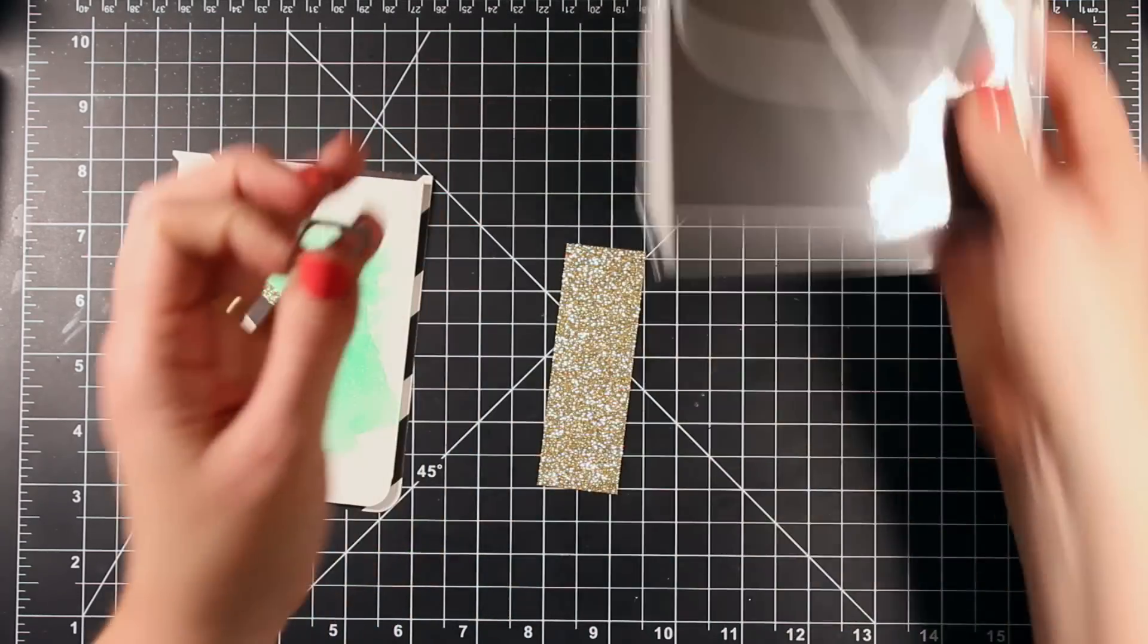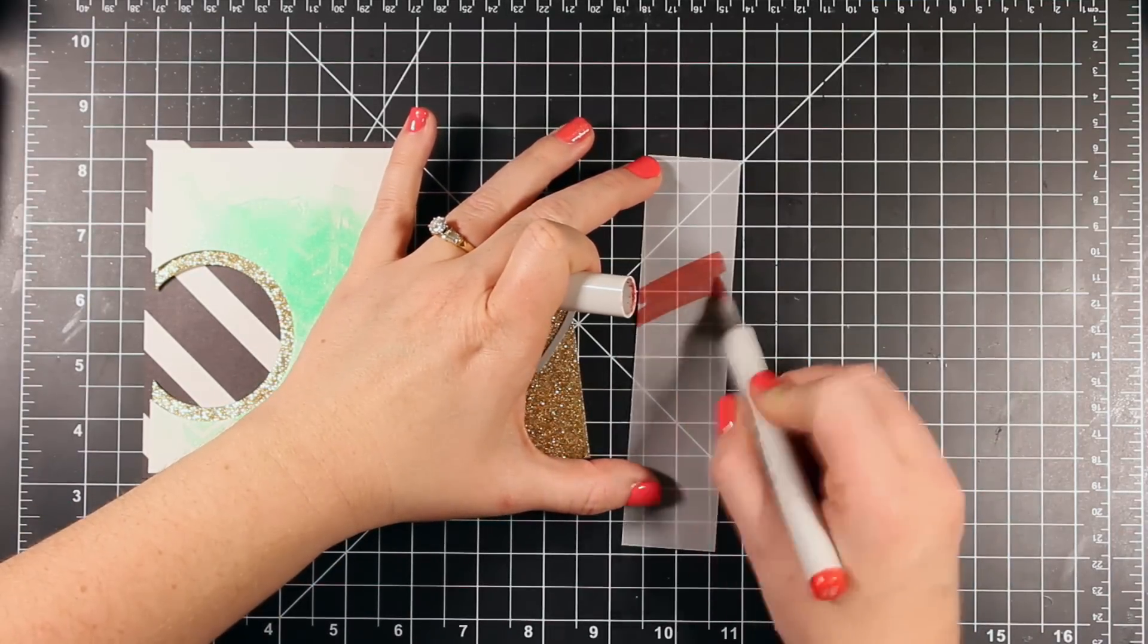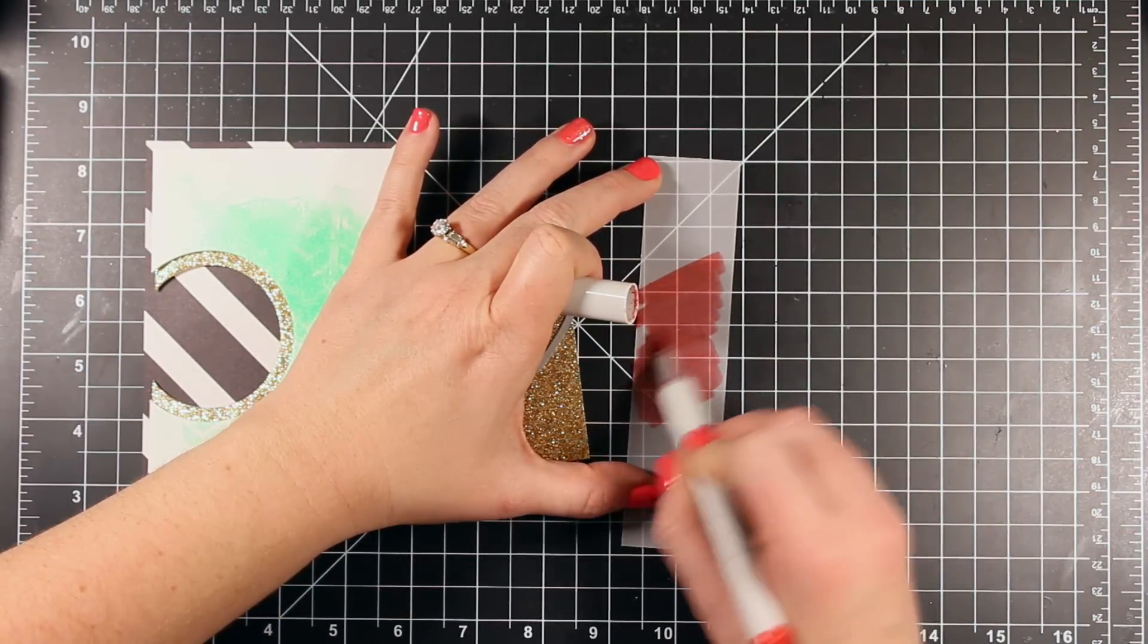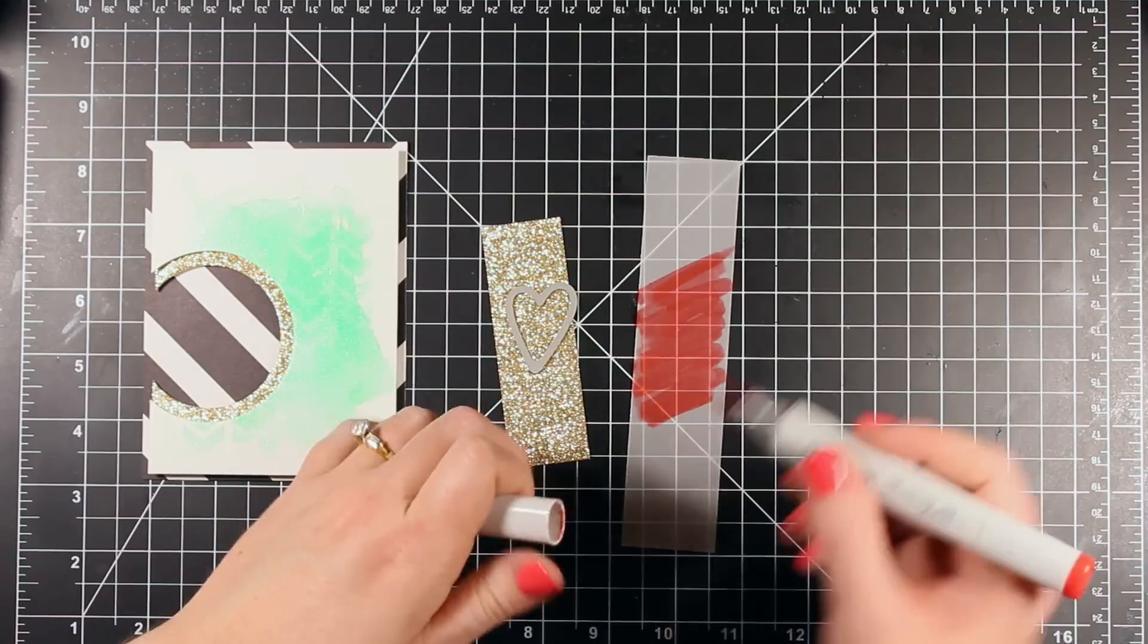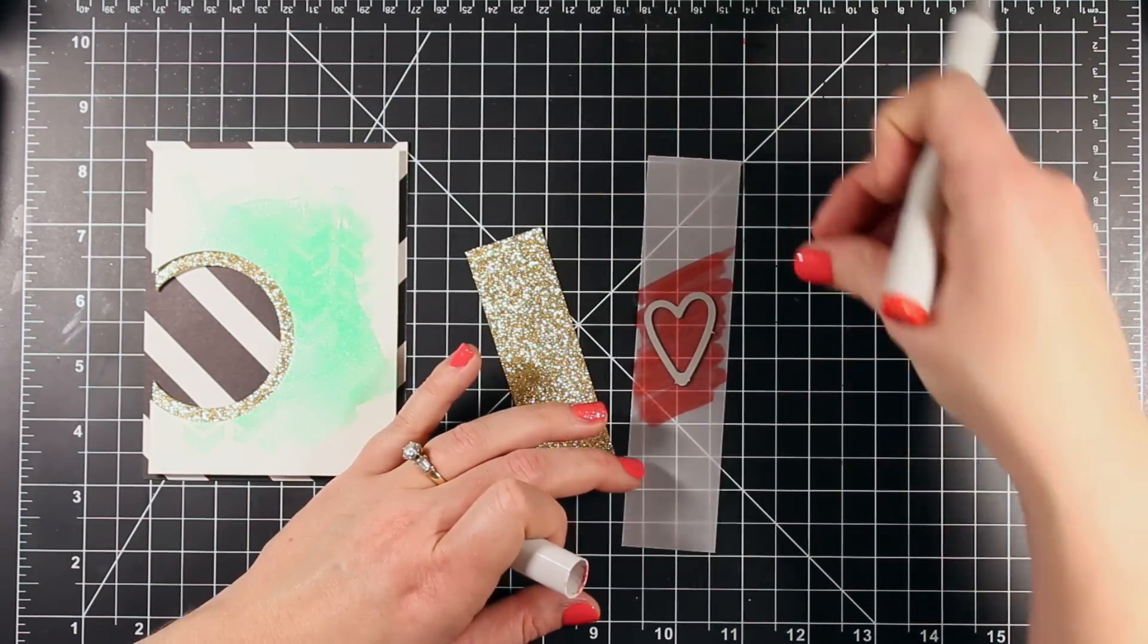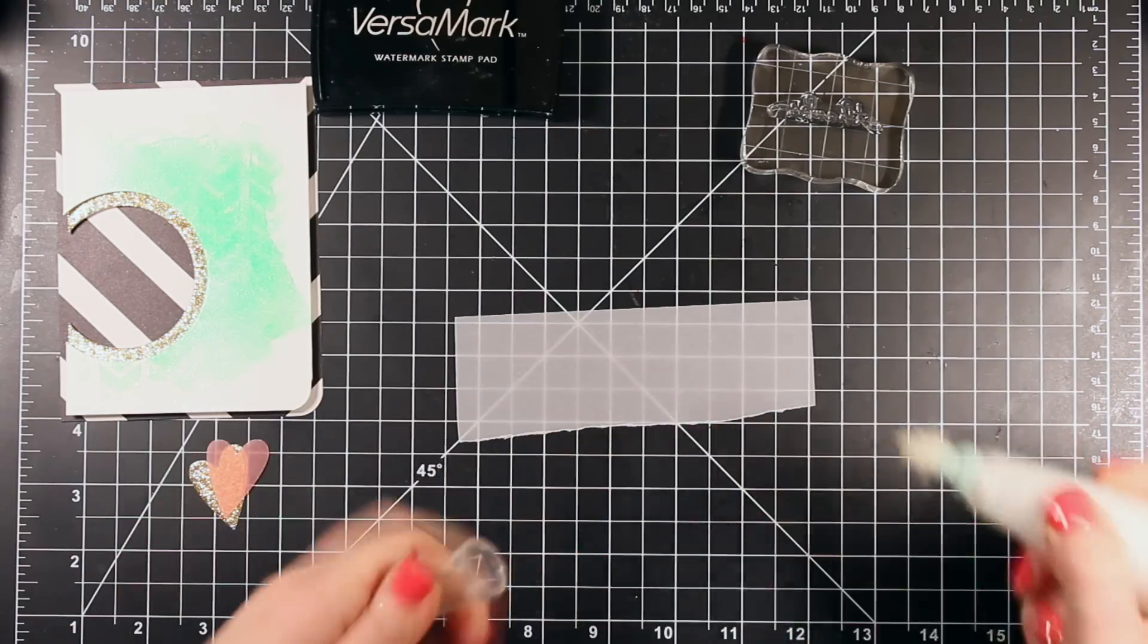Now I'm using these Folk Hearts dies from Essentials by Ellen and I'm creating a couple of hearts to put inside that window. I'm coloring some vellum so that I can cut a pink vellum heart. I'm just using a Copic marker to scribble on some color. And I cut that smallest Folk Heart die using some glitter paper and then that colored vellum there.